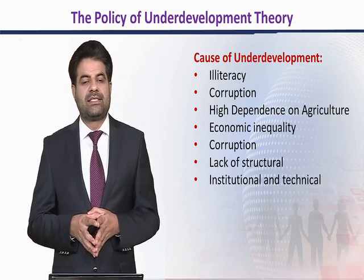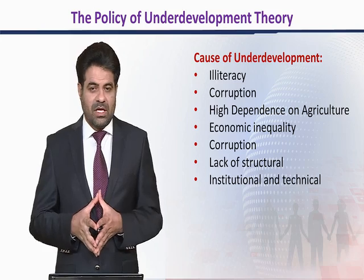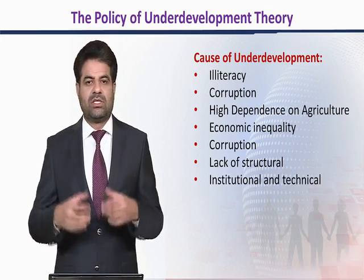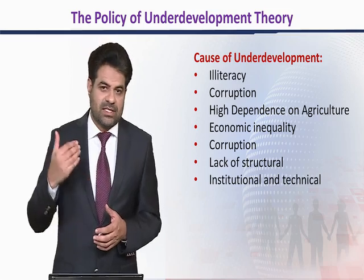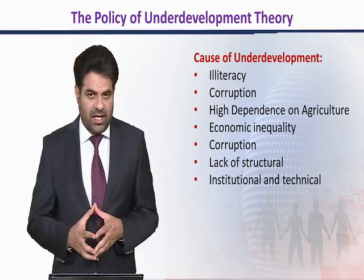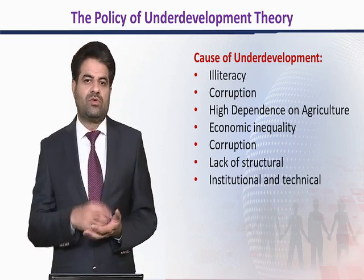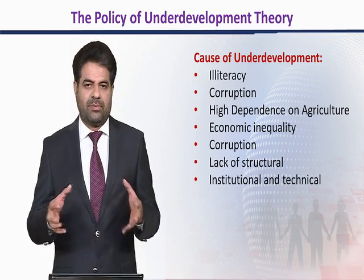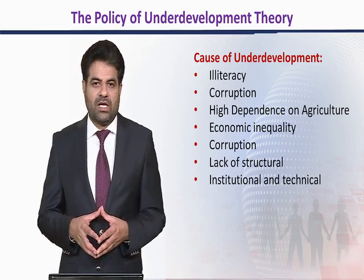Corruption in the systems and in society is a significant cause of underdevelopment. Corruption means using illegal means to achieve goals — violating rules and regulations, taking someone's rights, bribery — whether it is moral, legal, social, or political corruption. Societies with widespread corruption always remain underdeveloped.